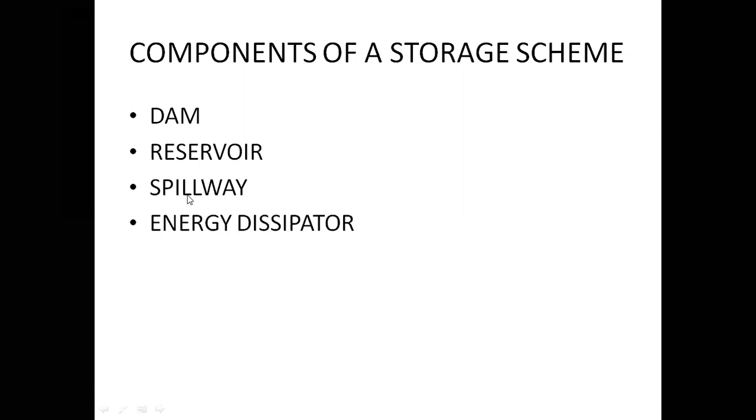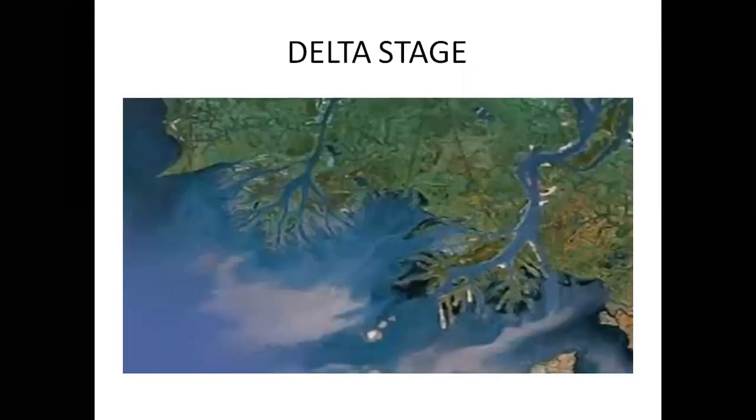These are the components of the storage scheme. We have a dam, we have a reservoir, we have a spillway for excess water when there is excess water in the dam, and we have an energy dissipator to dissipate the energy of falling water in the dam. And this is finally the delta stage wherein no amount of water can be trapped.